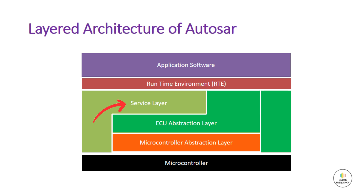The service layer provides a set of standardized software services which allow the application software to interact with the underlying software components in a standardized way. Regardless of the underlying hardware platform, the service layer offers the following functionality: memory services, diagnostic services like UDS, error handling, ECU state management and mode management, operating system functionality, and vehicle network communication and management services. This layer enables the application software to be developed independently from the underlying hardware and software architecture, which reduces the complexity of the software development process and facilitates the reuse of software components.